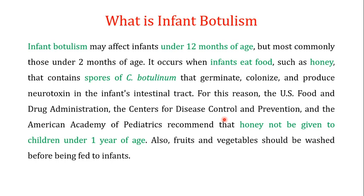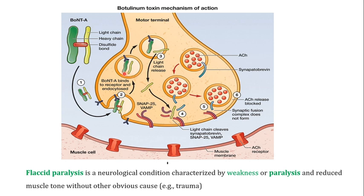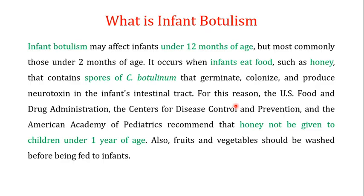Another important topic is infant botulism, the second type of botulism. In foodborne botulism, the preformed botulinum toxin in food is ingested, moves into the system, and blocks the release of neurotransmitters. In infant botulism, the mechanism is different.